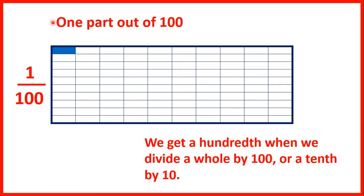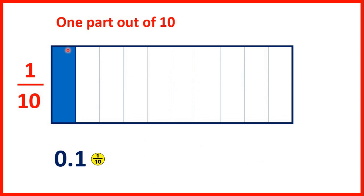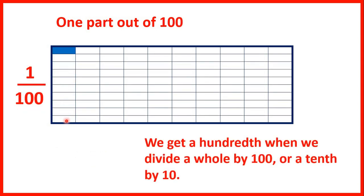If we have 1 part out of 100, we have 1 hundredth. We get a hundredth when we divide a whole by 100, or a tenth by 10. So you can see that the rectangle is now split into 100 pieces, and we have one of those pieces, so we have 1 hundredth. We can also get a hundredth when we divide a tenth by 10. So if we go back to the previous slide, we can see the amount shaded was 1 tenth, and now we've only got one of the 10 pieces that we had shaded, so dividing a tenth by 10 gives us one-hundredth.